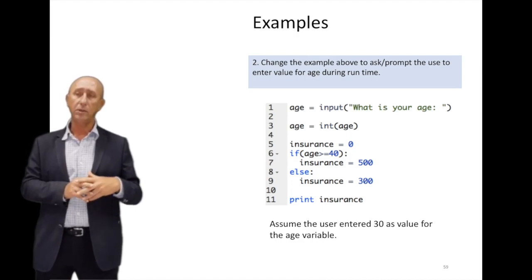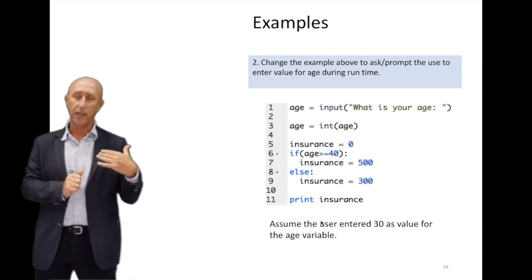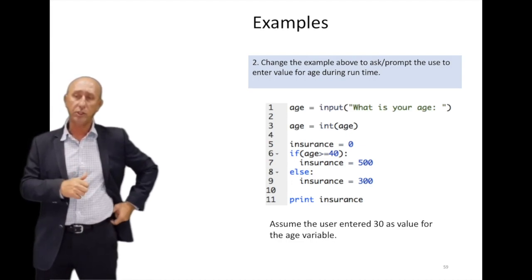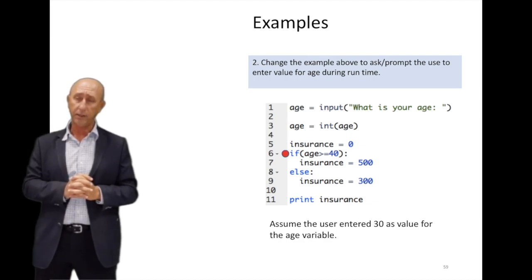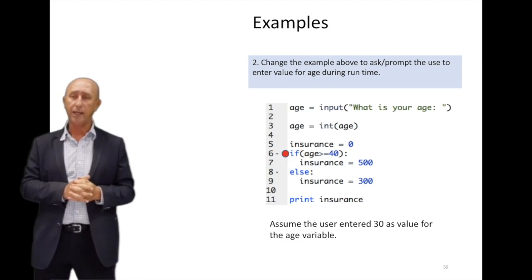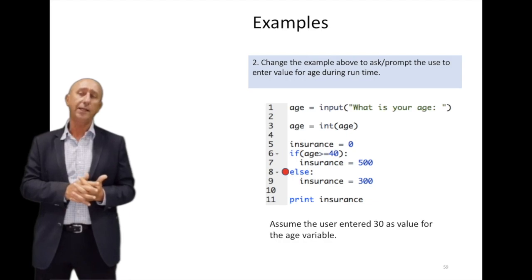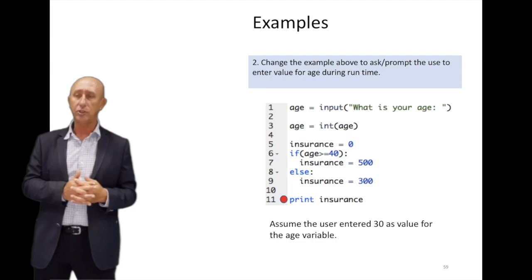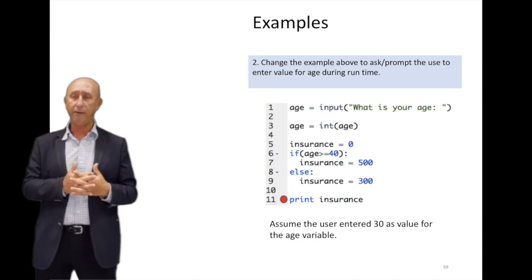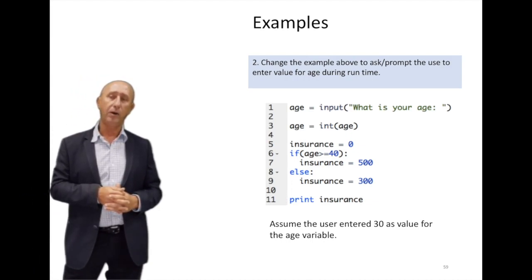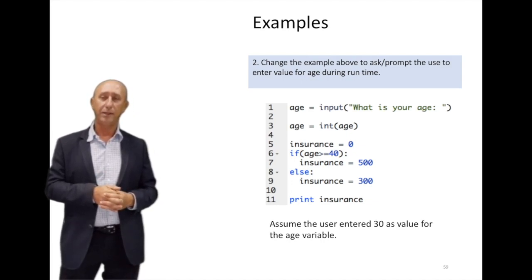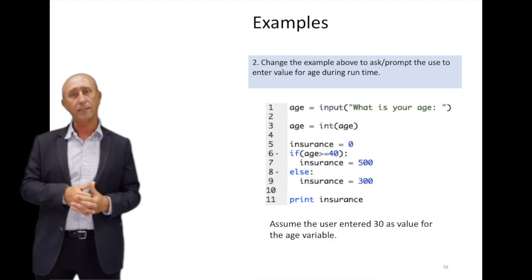That is how we use conditions in our programs. For example, if you enter 30: it converts to an integer, then on line 6 we check if age is greater than 40 — it is not — so it goes to the else statement, insurance becomes 300, we exit the if statement, and print the value. In the next part, Dr. Khamad will cover nested if statements, and we will do live coding to explain all these concepts.